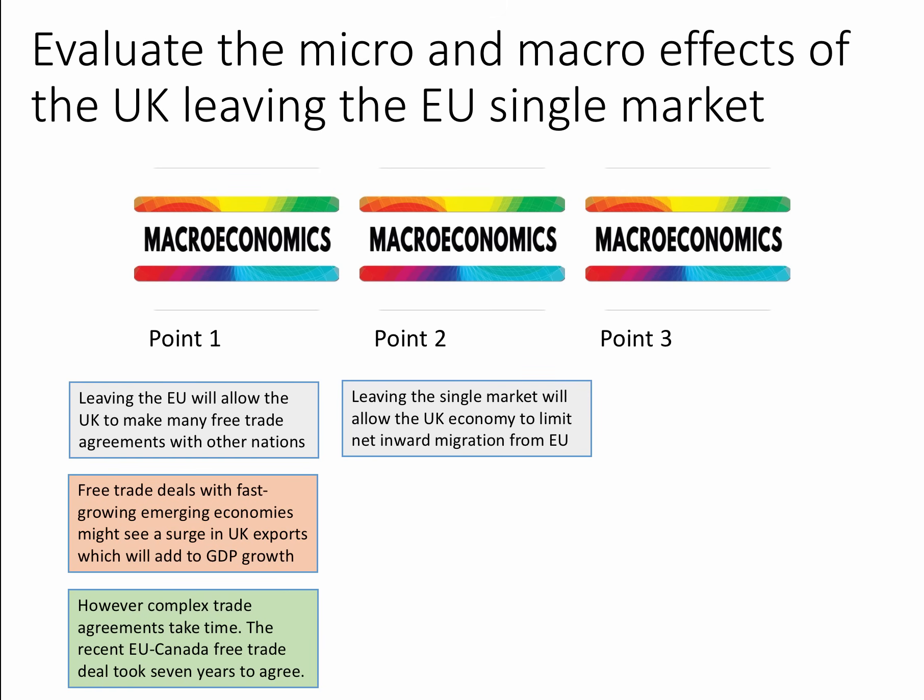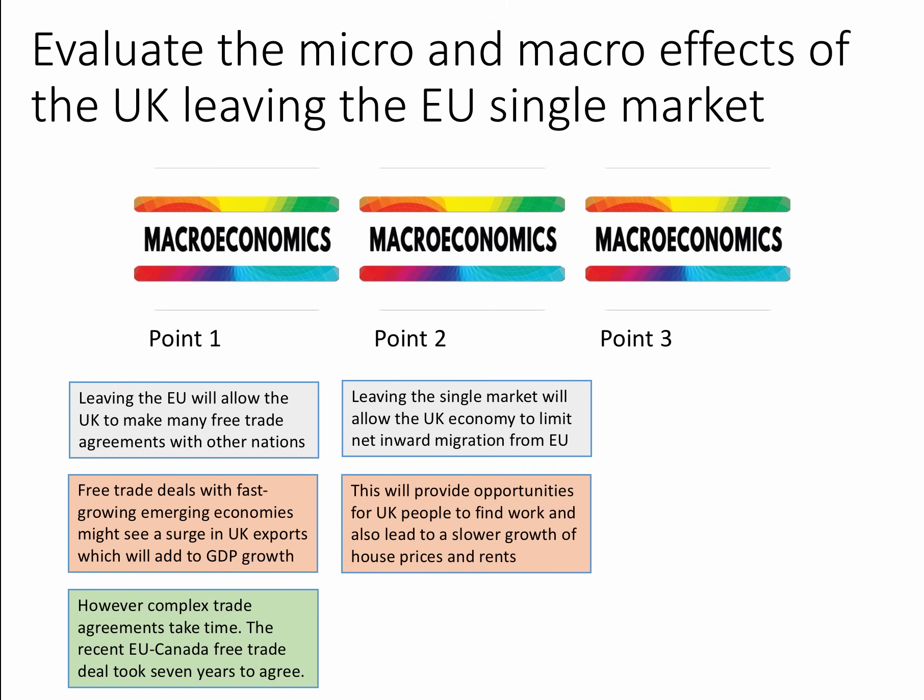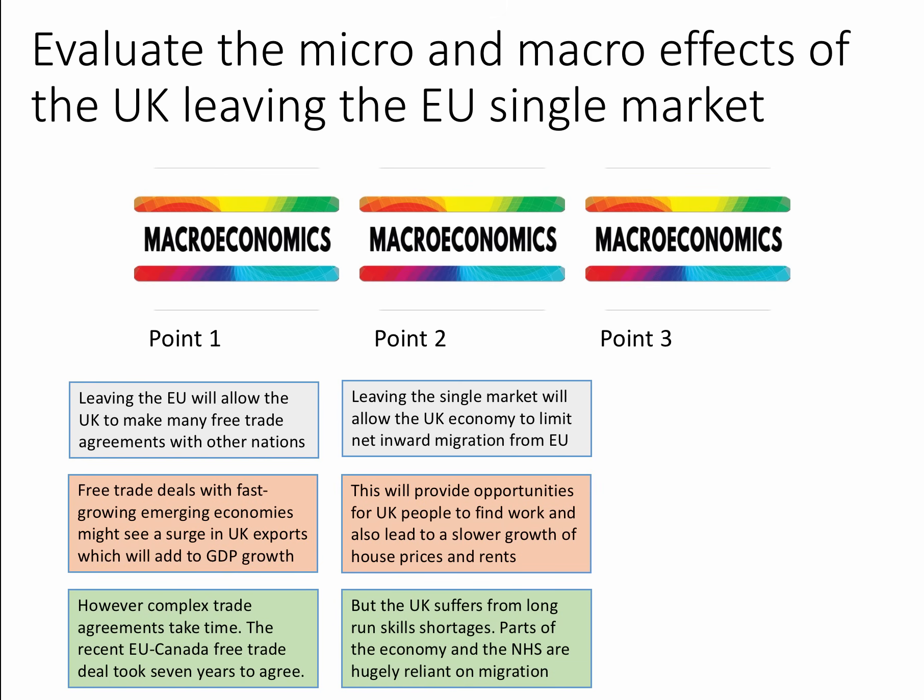My second macro point: leaving the single market will allow the UK economy to limit net inward migration from the EU. This will provide opportunities for UK people — perhaps younger people — to find work. With less upward pressure on population from strong net inward migration, this could also lead to slower growth in house prices and rents. You could build an argument about housing affordability limiting geographical mobility of labour, and inequality, as many people can't afford to buy or rent. However, the UK suffers from long-run skill shortages, and parts of the economy — the NHS in particular — are hugely reliant on migration. There could be a diminution in aggregate supply capacity unless we find the labour force and human capital to replace it.